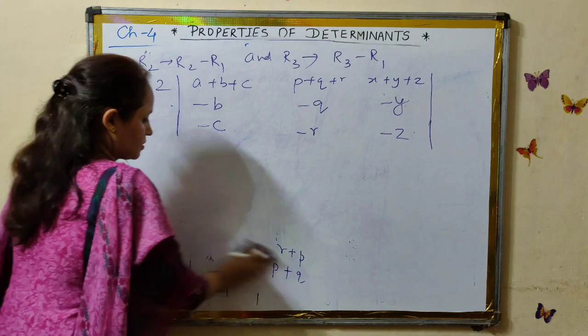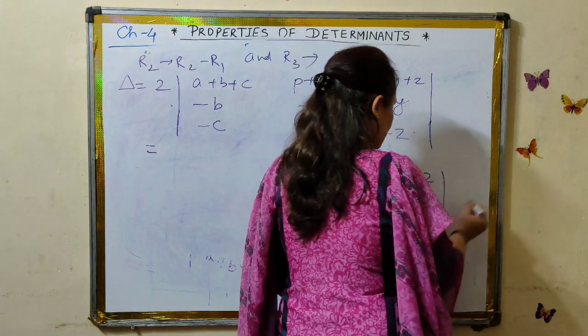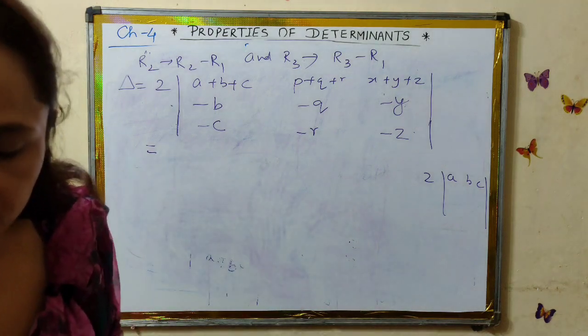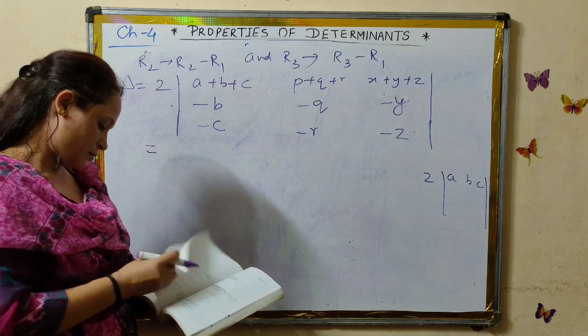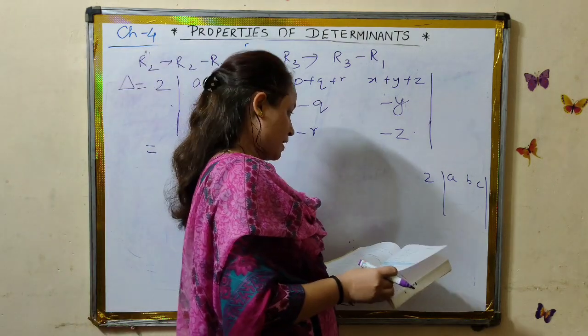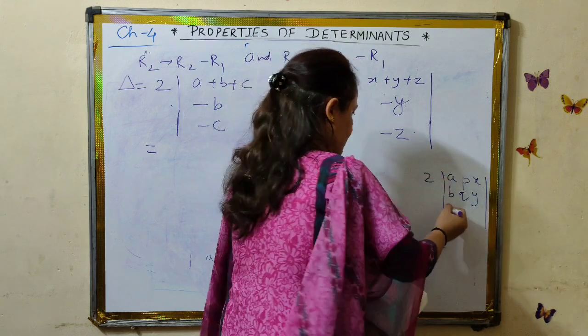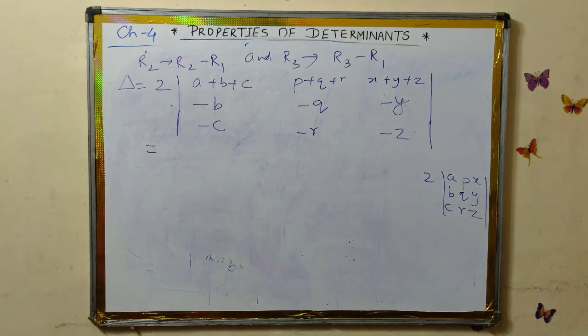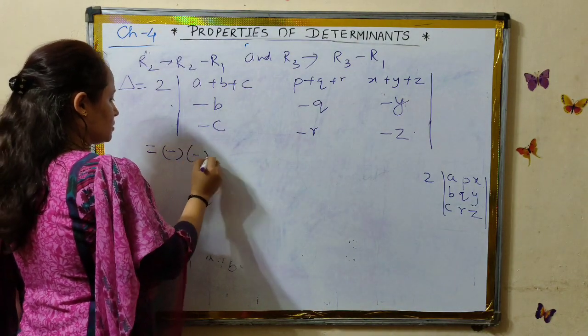This is a good question. You don't have to expand. Remember, 2 times ABC, you should get ABC. Let's see what we get. On the right side, we should get ABX, AQY, and CRZ. This is what we should get after solving this. Here we have reached where we can take minus common from the second row, minus common from the third row. We can take minus common from the second and third row respectively.